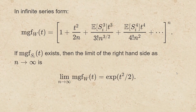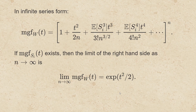In infinite series form, this tells us the moment generating function of w at t starts off 1 plus t squared over 2n plus the mean of s sub i cubed times t cubed over 3 factorial times n to the 3/2 power, and so on, all raised to the nth power. Now because there's an n in the denominator here, when I take the limit as n goes to infinity, that's going to be the exponential function evaluated at t squared over 2.